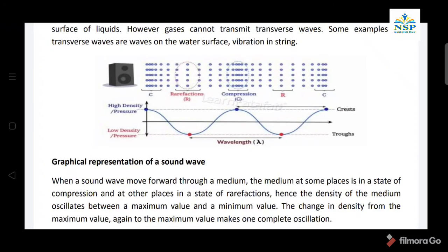Graphical representation of a sound wave: When a sound wave moves forward through a medium, the medium at some places is in a state of compression and at other places in the state of rarefactions. Hence, the density of the medium oscillates between a maximum value and a minimum value. The change in the density from the maximum value again to the maximum value makes one complete oscillation.